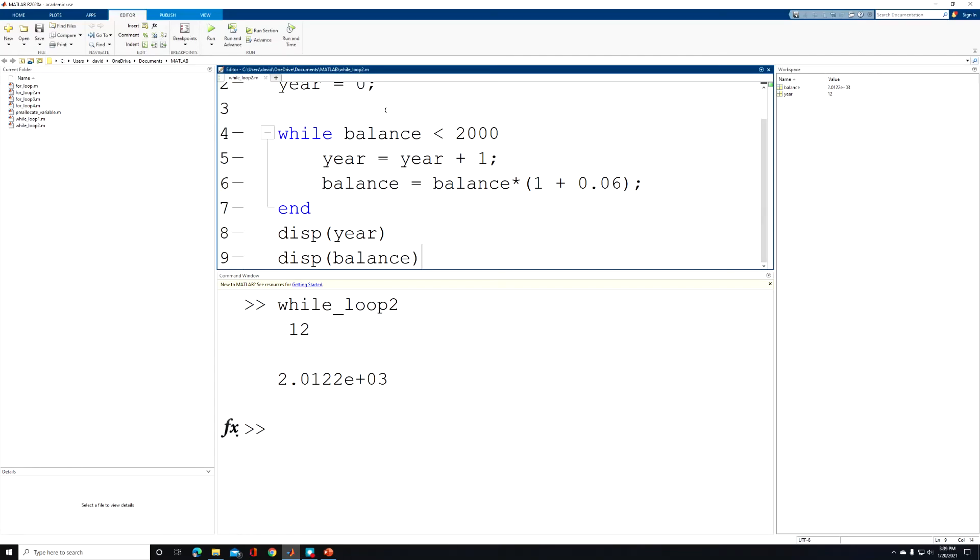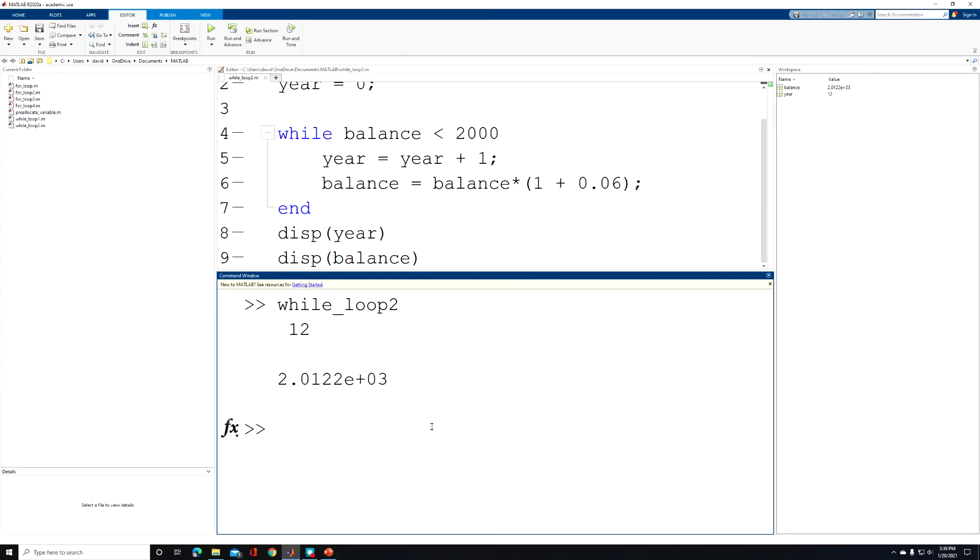Now if you would like, you could remove the semicolons from our two statements inside of the while loop. And what this would allow you to do is to see with each year passing how our balance changes. So to do that, I'm going to go ahead and wipe out our variables from the workspace using the clear command.